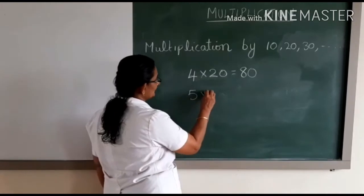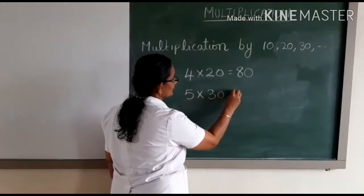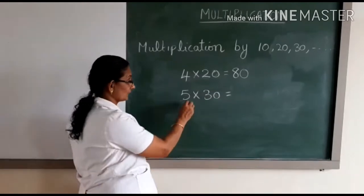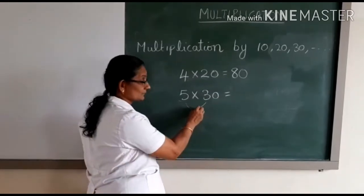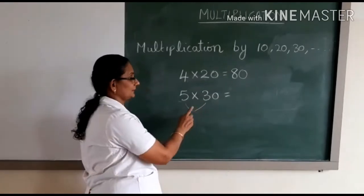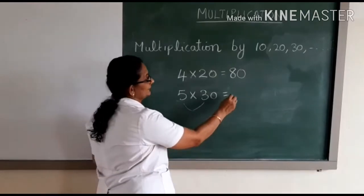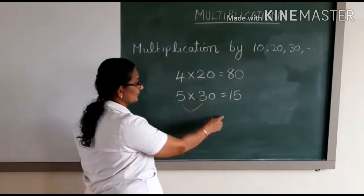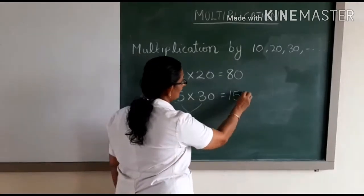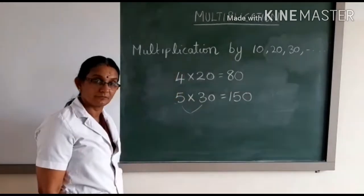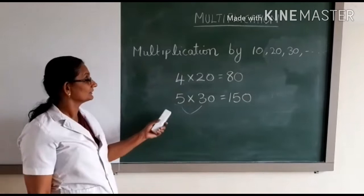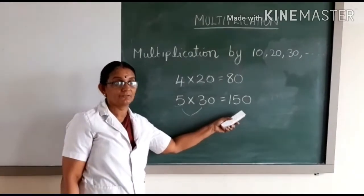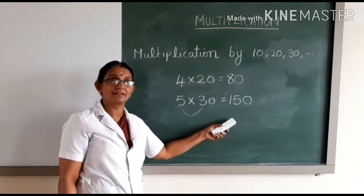Now let us see another example: 5 into 30. So what is 5 into 3? First we have to multiply these two numbers, 5 and 3. What is 5 into 3? It is 15. Then place the zero to the right of what you have got. So the answer for 5 into 30 is equal to 150. Isn't it easy, children?